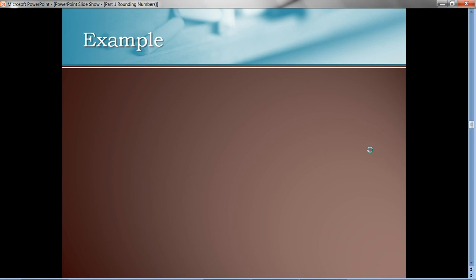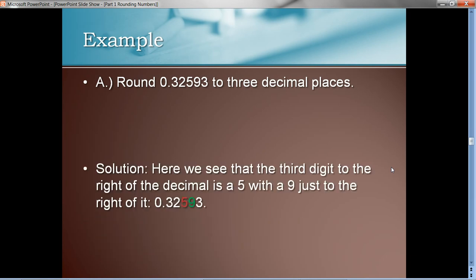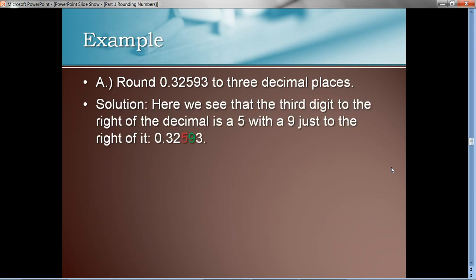All right? So, the same thing you've kind of learned for a long time since grade school. So, let's just try an example and make sure we have the idea. It says round 0.32593 to three decimal places. Okay. So, here we go. Here we see the third digit to the right, there it is, is a five,